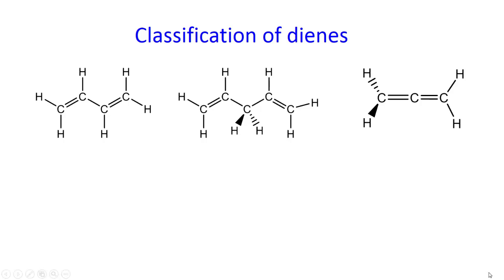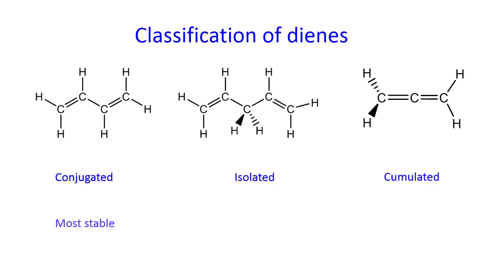Classification of dienes. There are three kinds of dienes: conjugated, isolated, and accumulated. Conjugated dienes are the most stable, followed by isolated, and accumulated dienes are the least stable and most reactive.